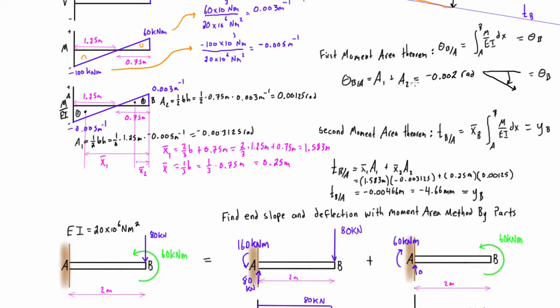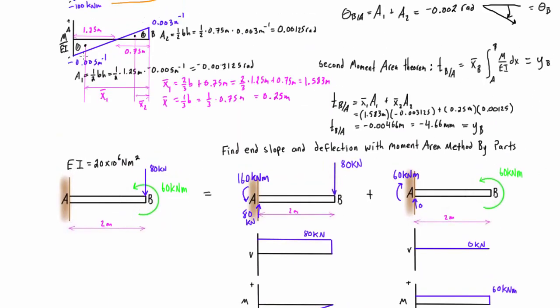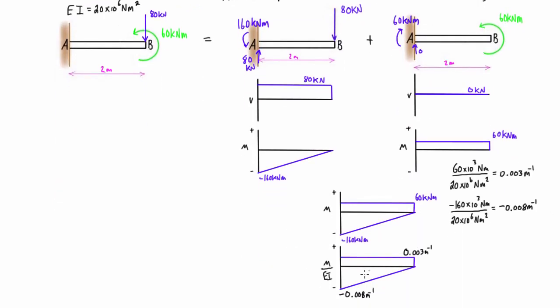Now we are ready to do the first moment area theorem, which is where we're just taking the integral of the M over EI diagram. Basically we're summing up the areas from interval A to B, because we know that the slope and displacement at A is going to be zero. When we take our measurements relative to that, that will be the actual slope and displacement for B. In this case we're just adding up different composite shapes.